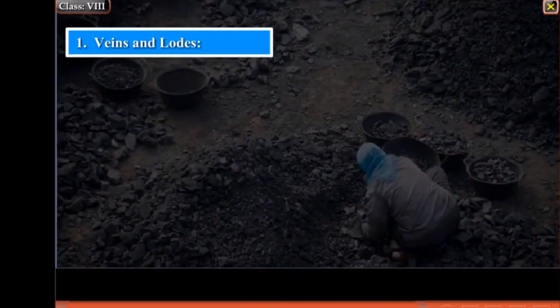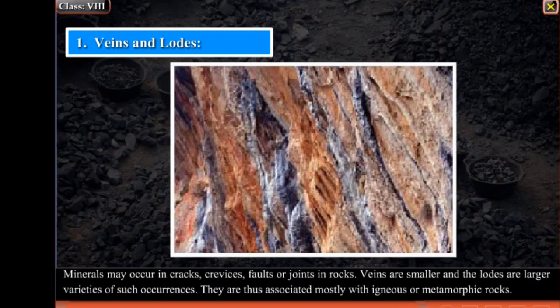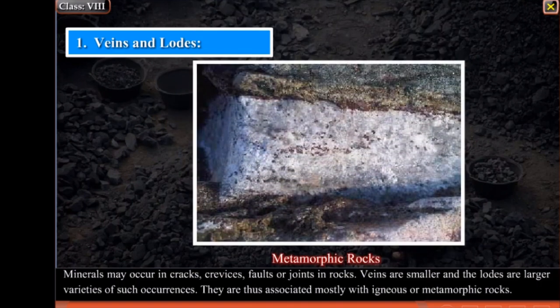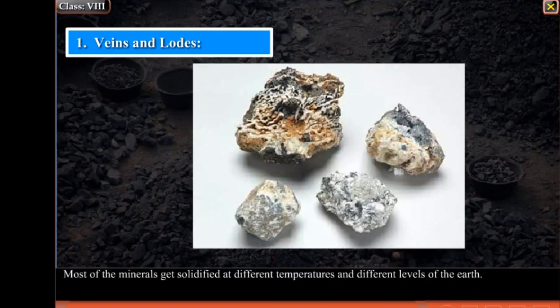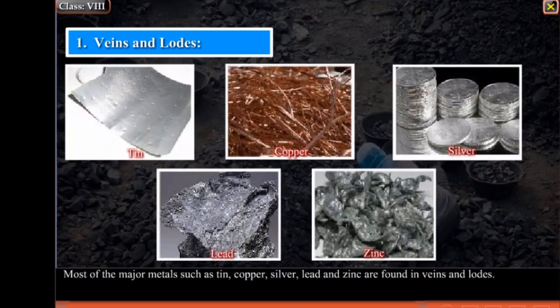Veins and Lodes: Minerals may occur in cracks, crevices, faults or joints in the rocks. Veins are smaller and lodes are larger varieties of such occurrences. They are thus associated mostly with igneous or metamorphic rocks. Most minerals get solidified at different temperatures and different levels of the earth. Most of the major metals such as tin, copper, silver, lead and zinc are found in veins and lodes.